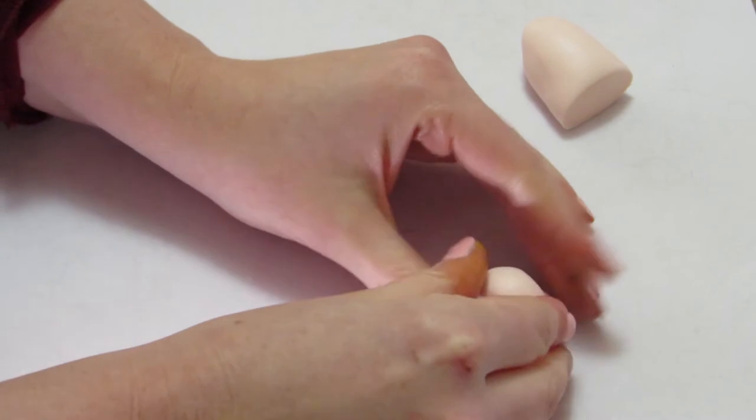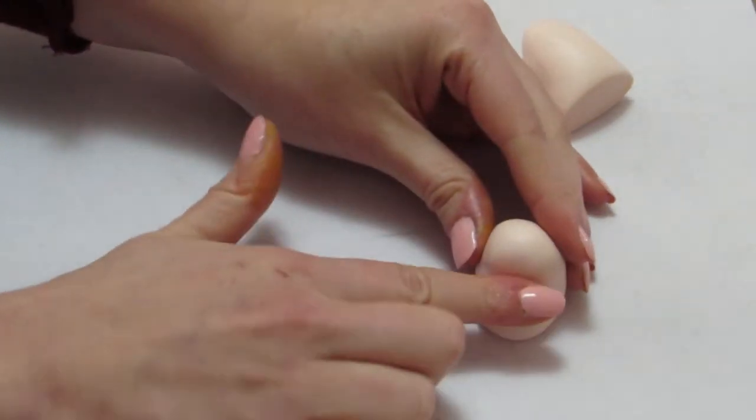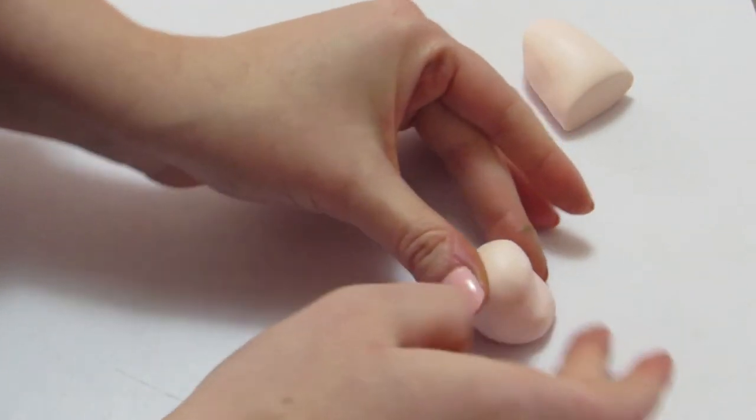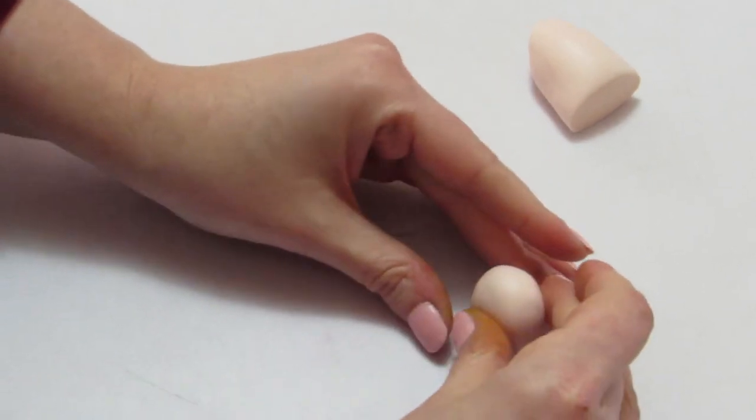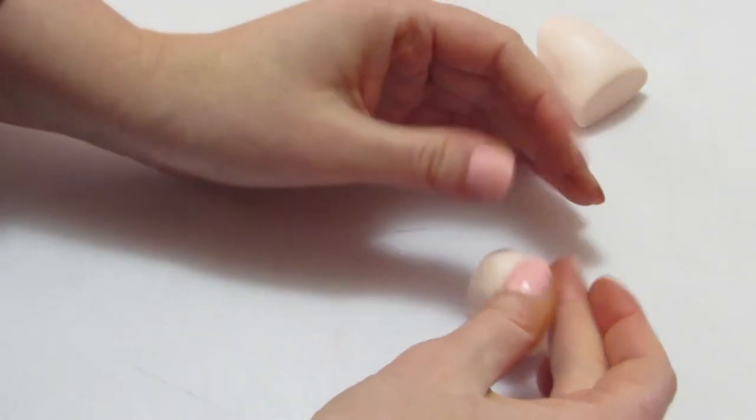So you start out with a beige peachy colored cylinder, a fat little one. You don't want it too long. And all I did here was I pressed up to make it curve upward. So that way our little pig is going to be sitting on his rump with his chest and his front hooves standing up straight. And you want to make sure you keep them nice and round while you're doing this.